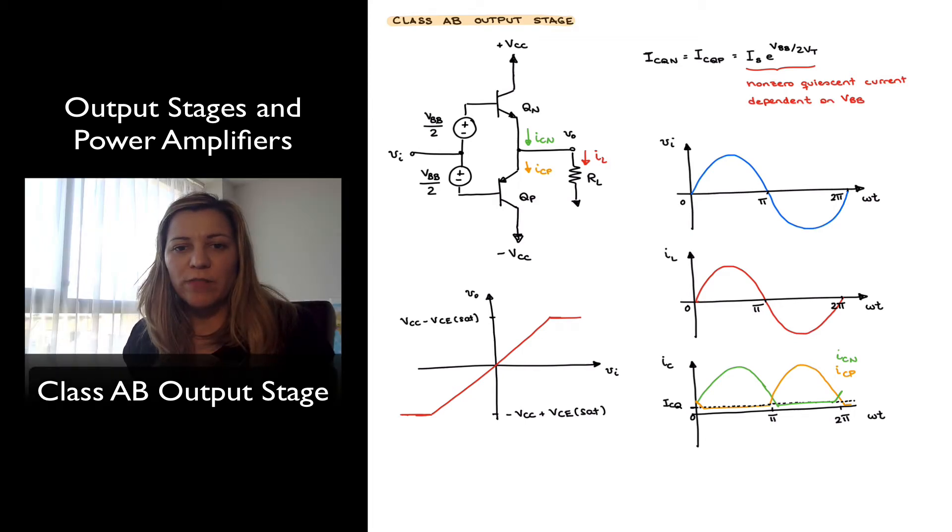Hello. So far we have talked about the Class A output stage and the Class B output stage. Class A output stage was characterized by transistors that were always on, even when the load was not drawing any current, and so therefore it had the worst power efficiency. But the transistors were always in the linear region of operation, and therefore it had good linearity.